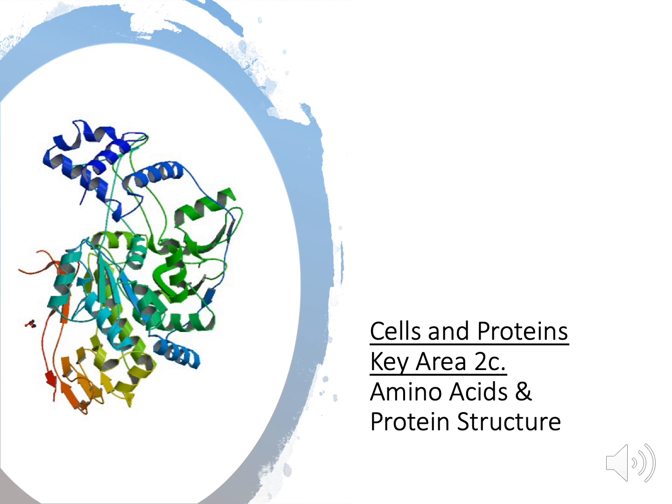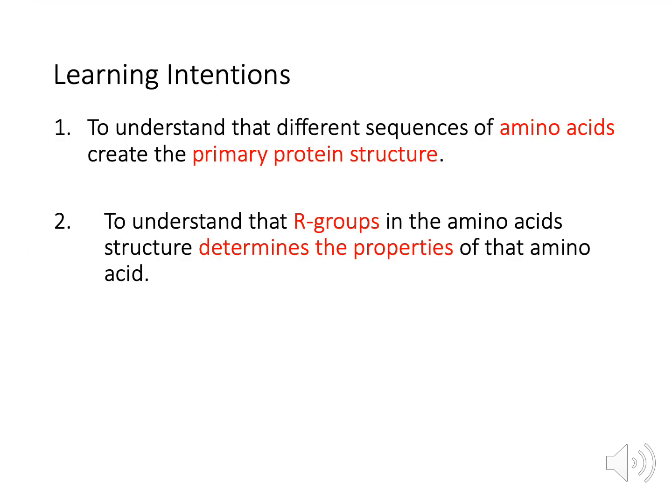This week we are going to start at Key Area 2C, which is Amino Acids and Protein Structure. We have two learning intentions today. The first is to understand that different sequences of amino acids create the primary protein structure, and the second is to understand that R-groups in the amino acid structure determine the properties of that amino acid.